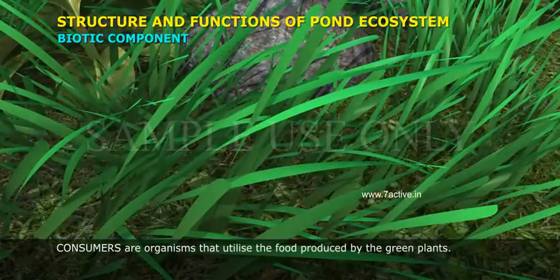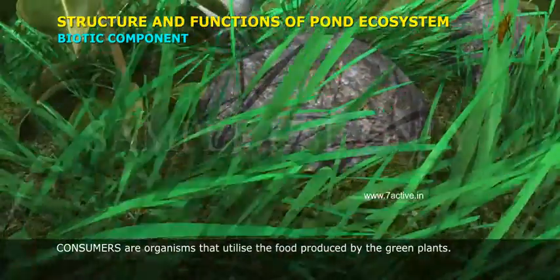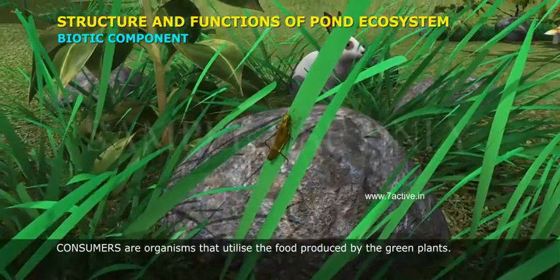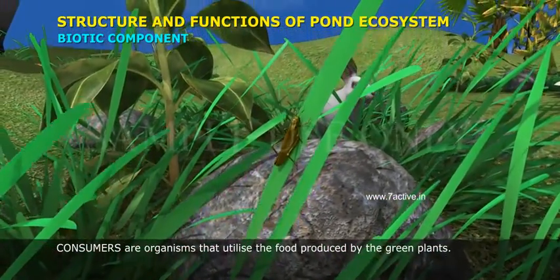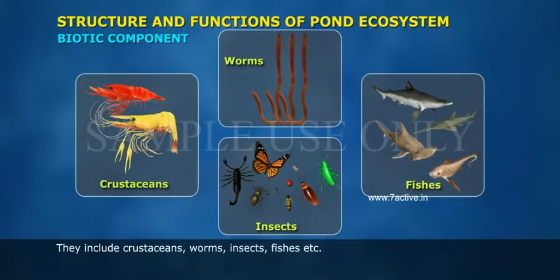Consumers are organisms that utilize the food produced by the green plants. They include crustaceans, worms, insects, fishes, etc.